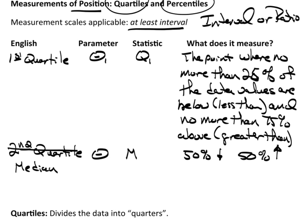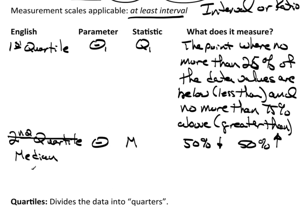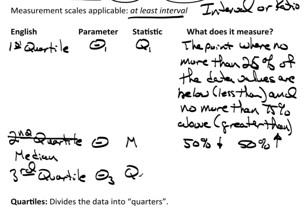Then we have the third quartile. The parameter is theta-three, the statistic is Q3, and the definition is the same except now we'll have 75 percent below, leaving 25 percent above.